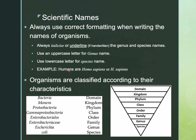For example, Escherichia coli, or we are Homo sapiens — genus Homo, species sapiens. You can also shorten it after you've used the full version already in your report or project: all other instances can shorten the genus to the first letter and a period, followed by the species name, like E. coli.